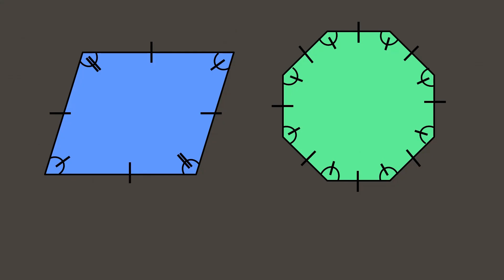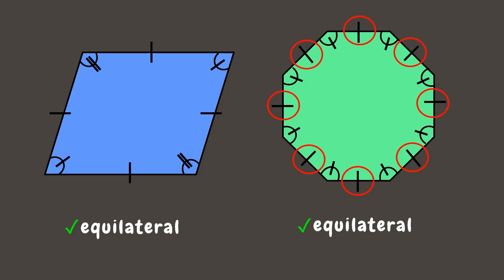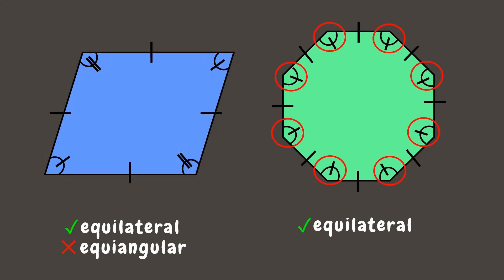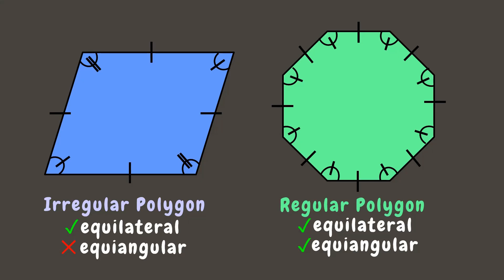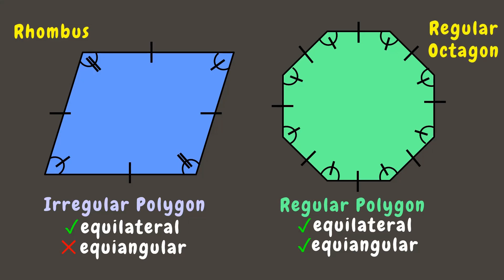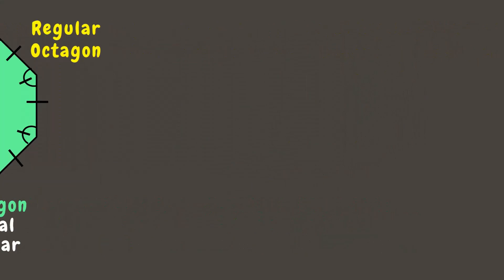Let's find out which one is a regular and irregular polygon. The first polygon has four equal sides, so it is equilateral. The second has eight equal sides, also making it equilateral. However, the first polygon has only two pairs of congruent angles, not all equal, so it is not equiangular — making it an irregular polygon. The second has eight congruent angles, making it equiangular and therefore a regular polygon. The first polygon is a rhombus, which is always irregular, while the second is a regular octagon.